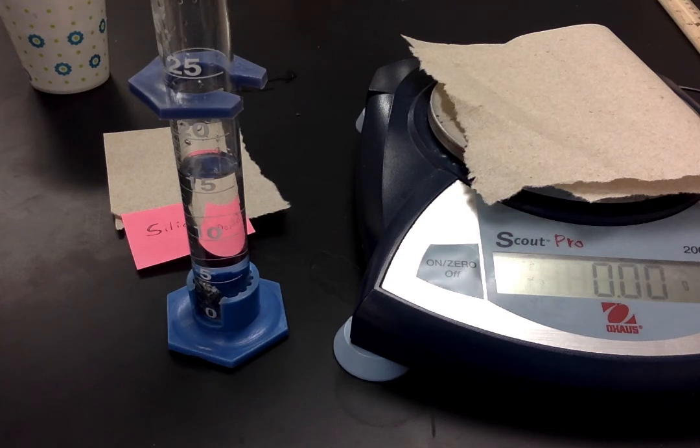Then use water displacement. So figure out how much the water level rose by. That's going to be the volume of your silicon. And then use the mass and volume of the silicon to determine the density of silicon. Then you can compare that value to your estimate and then tell me about some things that you learned in this lab.